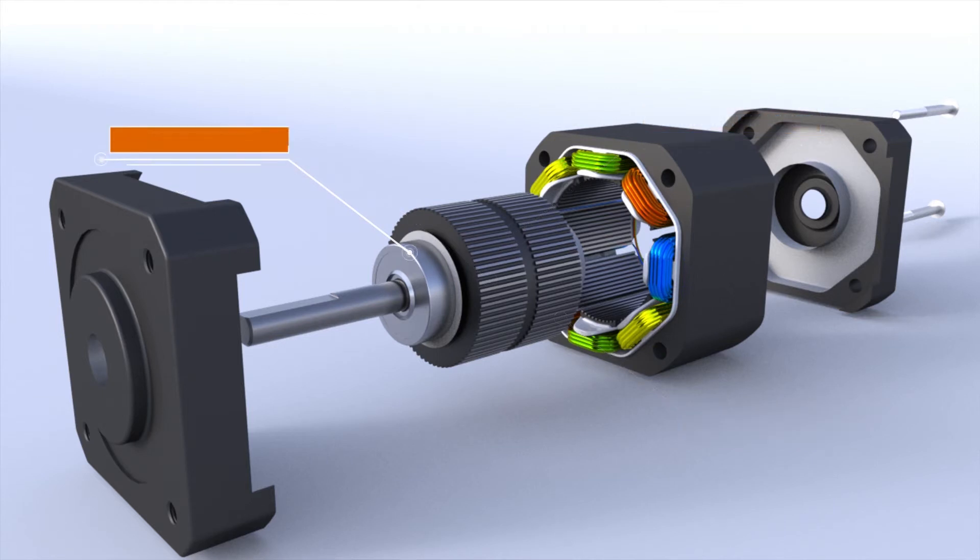Bearing allows the shaft to rotate when rotor is turned. Shaft is attached to a rotor and provides rotational drive for the load. Hybrid stepper motors can be made with a single or double shaft.